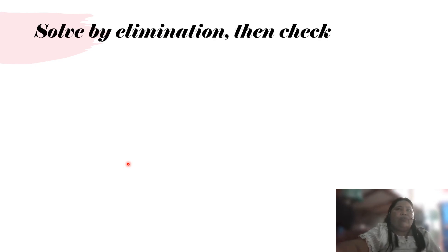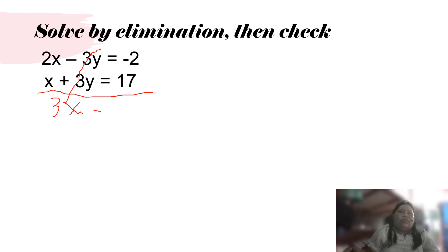So let's solve by elimination and then check. We have here two equations. From this, we can eliminate directly the y. So 2x plus x is 3x, that equals 17 minus 2, which is 15. Divided by 3, therefore the value of x equals 5.